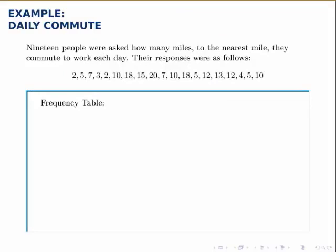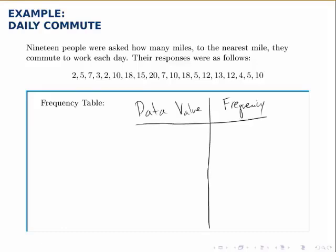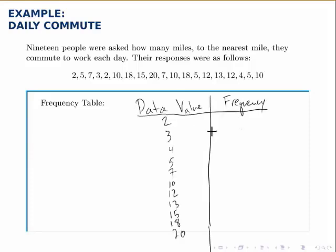Here we're going to build a simple frequency table. 19 people were asked how many miles to the nearest mile they commute to work each day, and their responses were recorded. The frequency table lists each possible data value and the number of times that value occurs — two columns, one for data values and one for their frequencies. We go through the data set, and for each unique data value we see, we list it in the left-hand column. Once we've filled in all the data values, we count how many times they occur. For instance, the value two appears twice in the data set, so it has a frequency of two. Three appears only once, so it has a frequency of one.